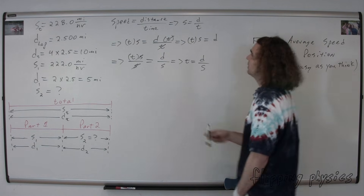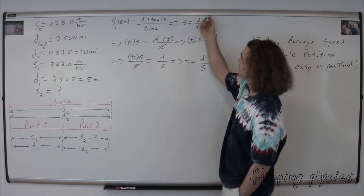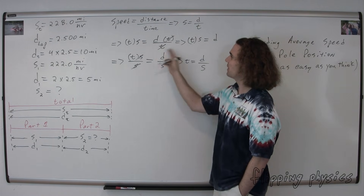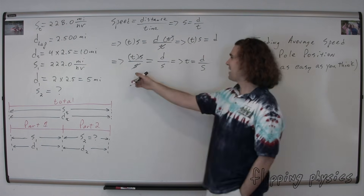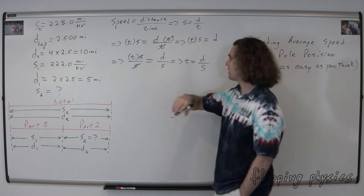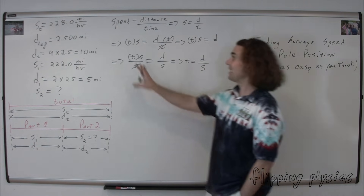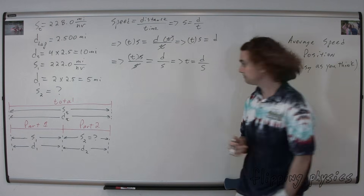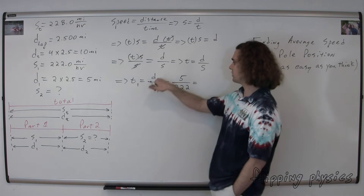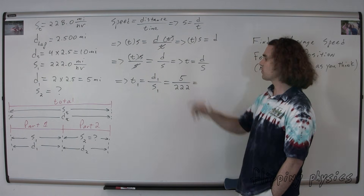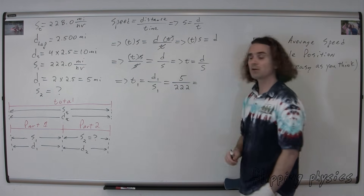Very nice. You can see we have speed equals distance over time, and our goal is to solve for time because that's the one thing we don't really know. So we multiply both sides by time; time cancels out on the right-hand side, leaving time times speed equals distance. Therefore, dividing both sides by the average speed, we end up with time equals distance traveled divided by average speed. Now let's look at part one specifically. Time 1 is equal to distance 1 divided by average speed 1. The distance for part one was five miles and the average speed for part one was 222 miles per hour. What do we get for our time for part one?